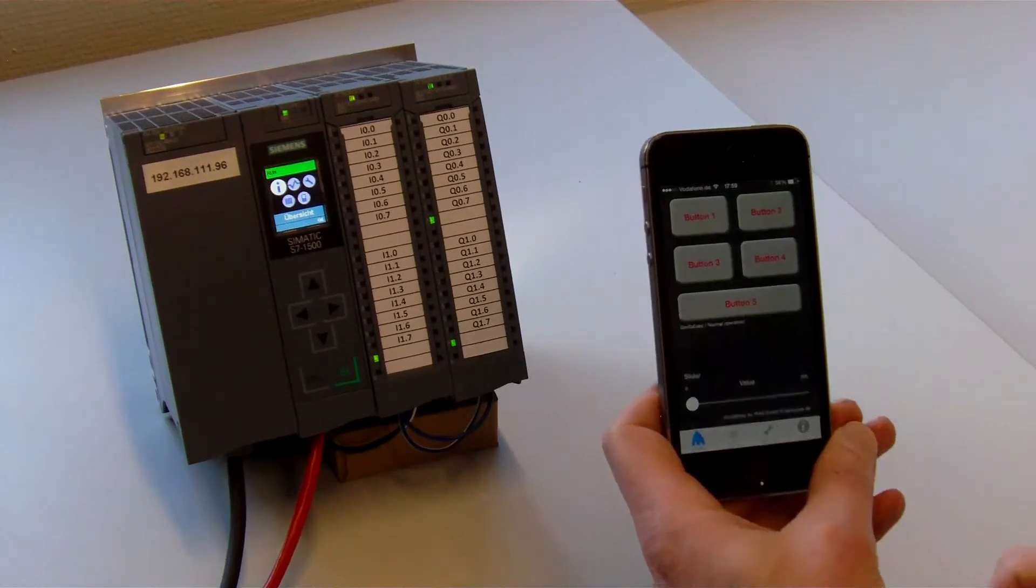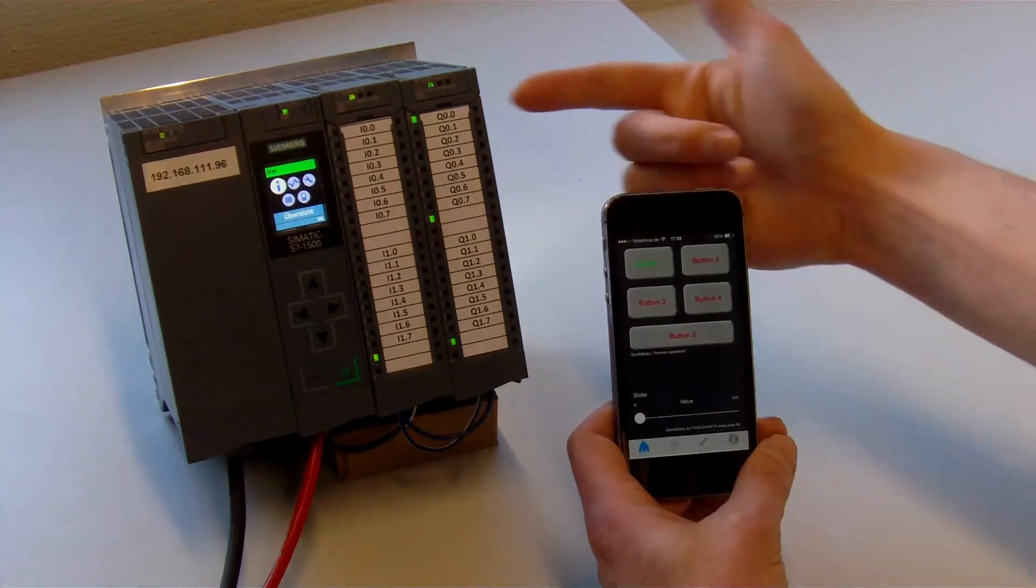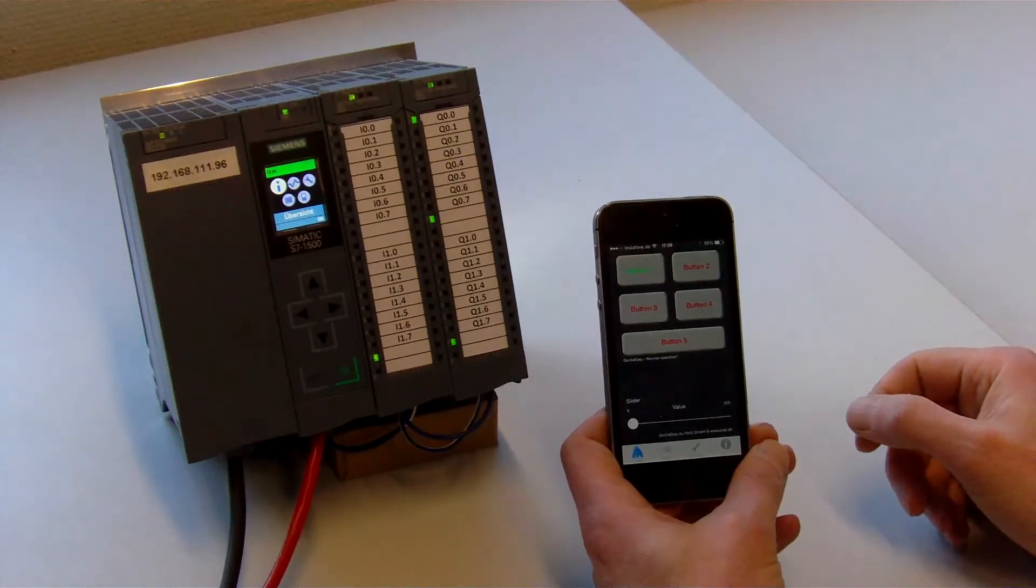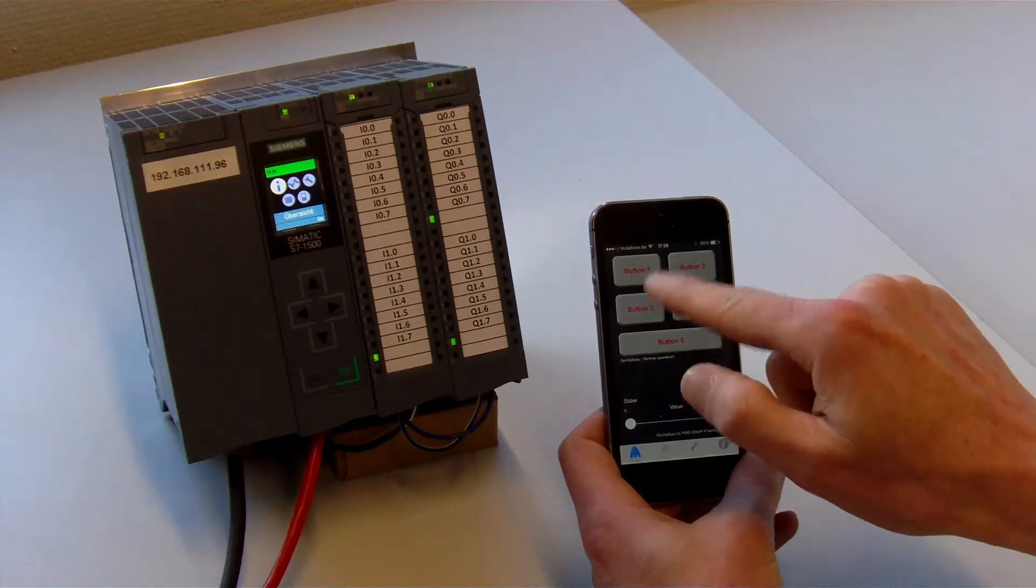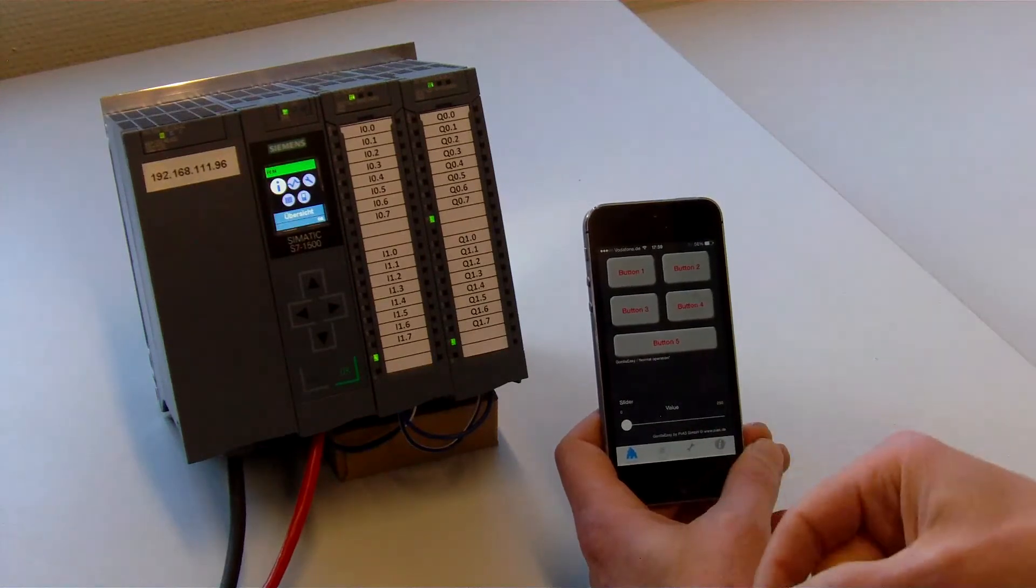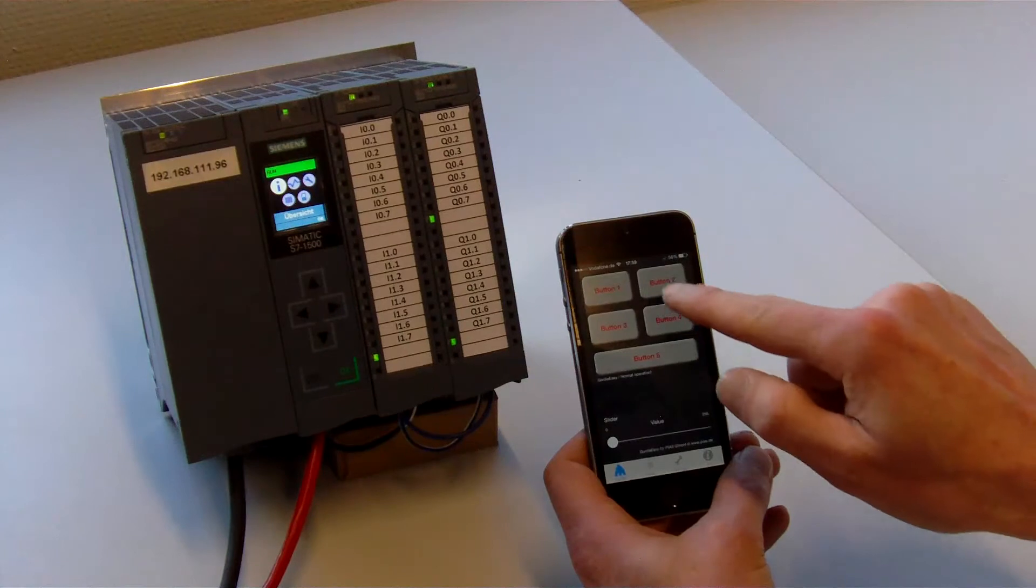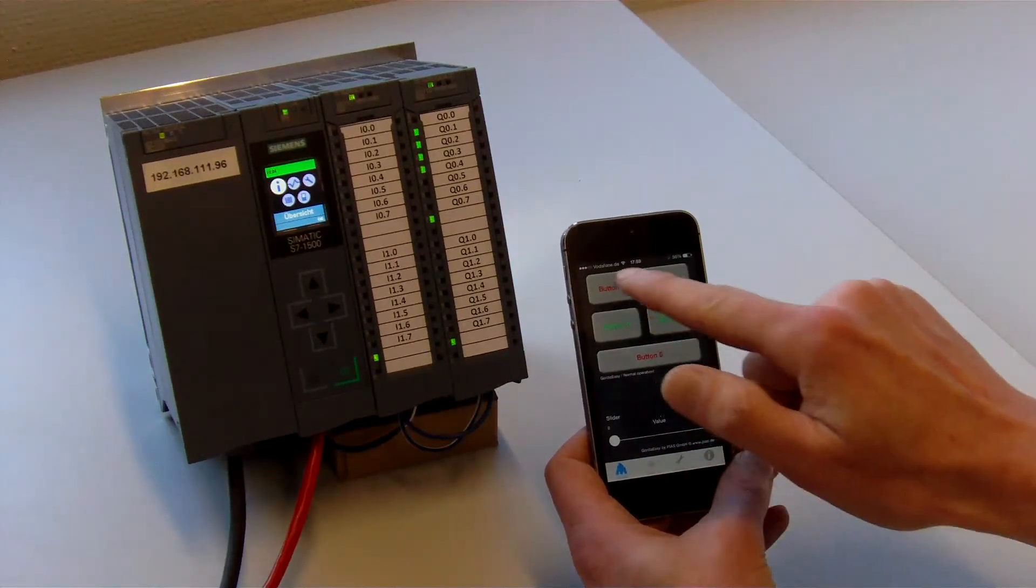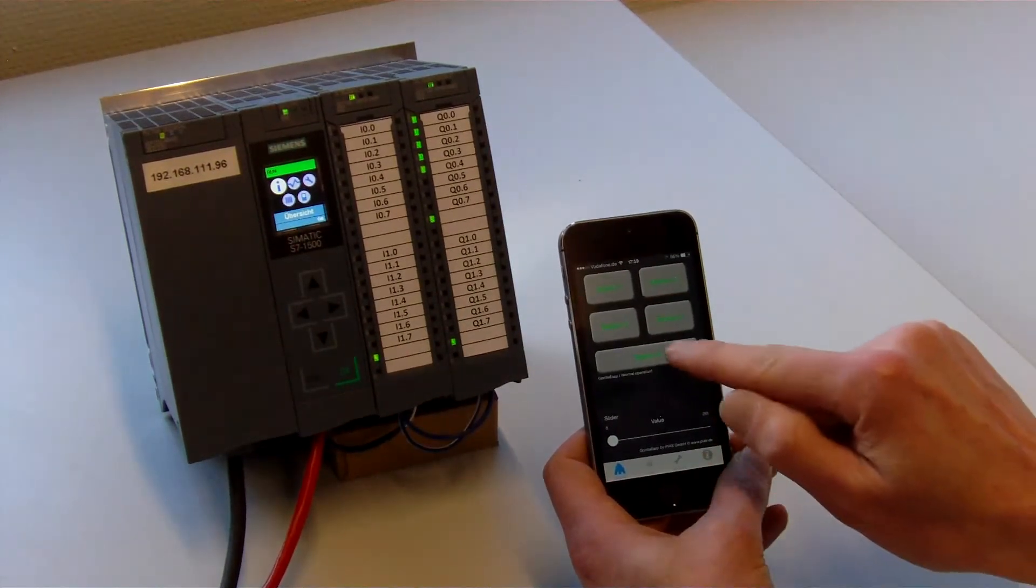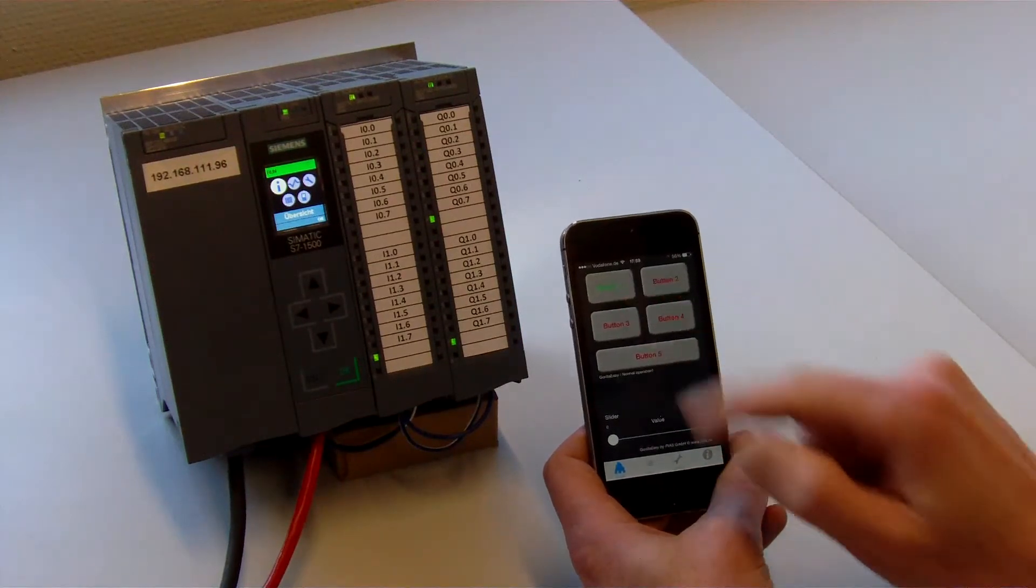So, now when we set button 1 you see that the output on the PLC is set. And we press it again. You see the bit is toggled on, off, on, off and so on. And this works for all those buttons. We set them back off.